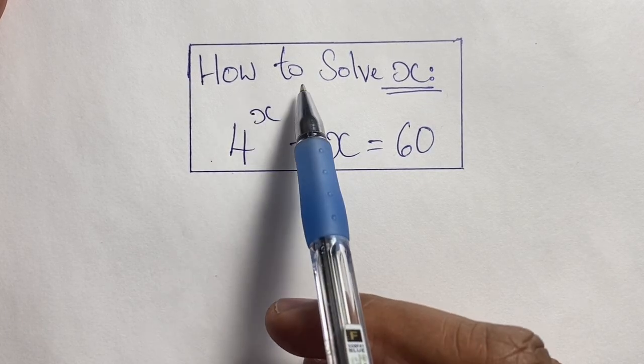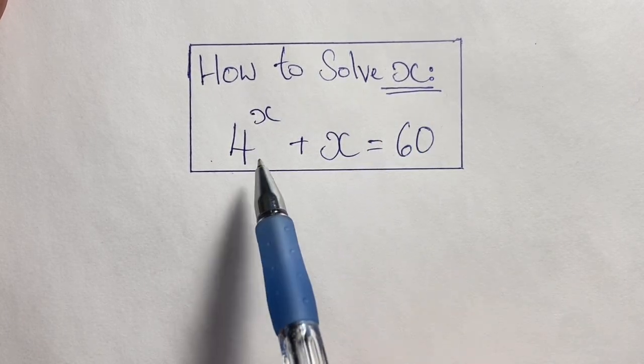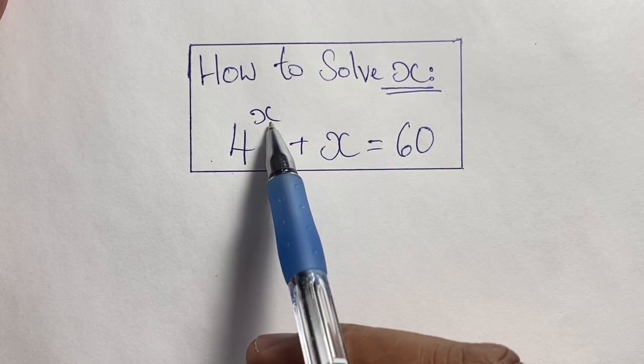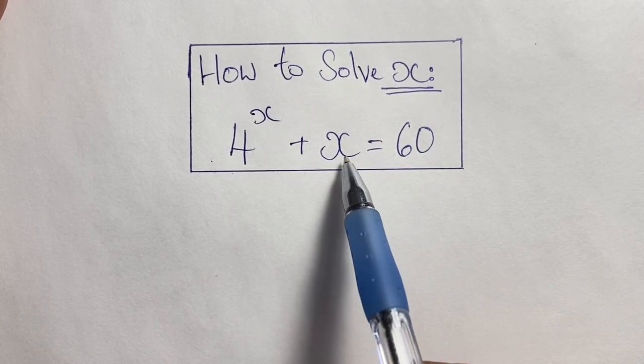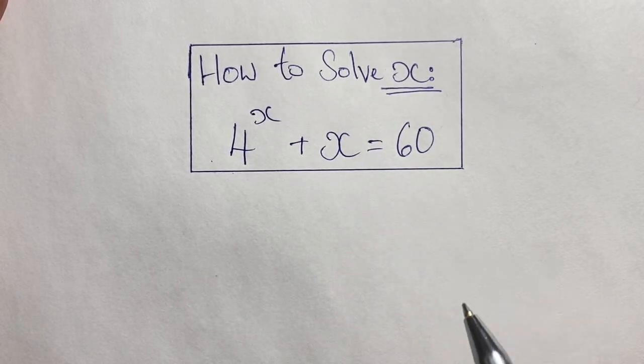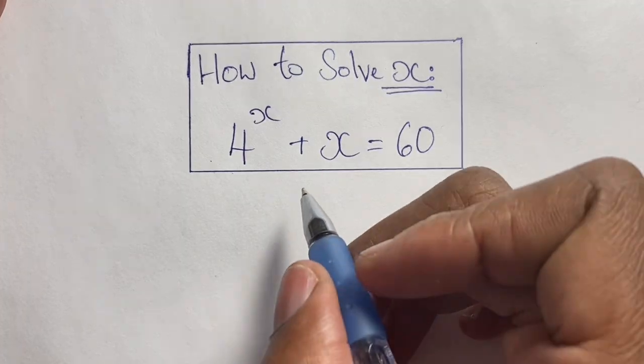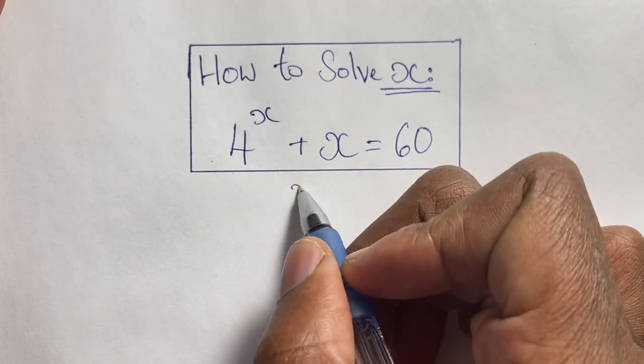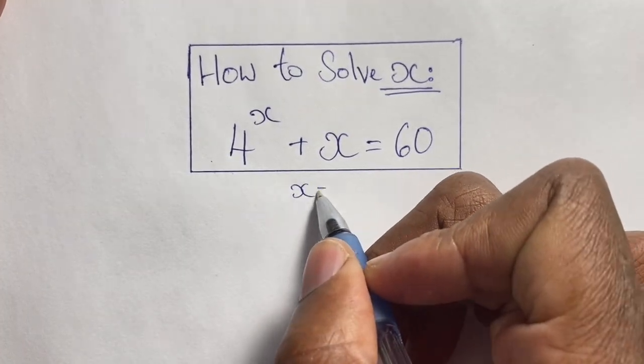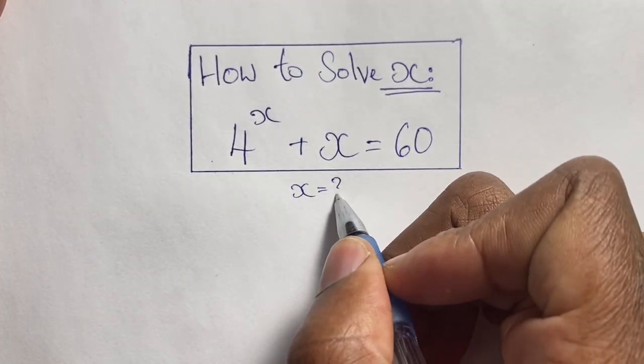Greetings again everyone. Welcome back to my channel. Here we're going to solve this equation where we have 4 to the power of x plus x is equal to 60, and we are given to find the value of x.